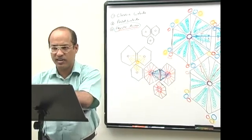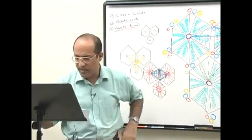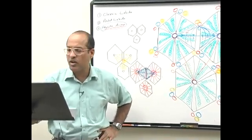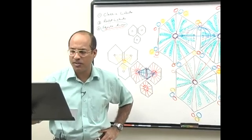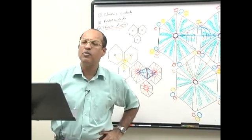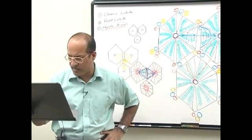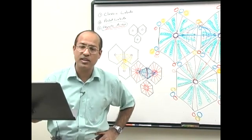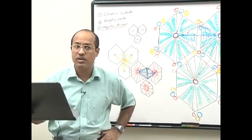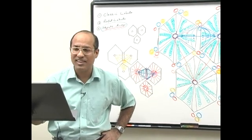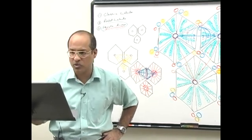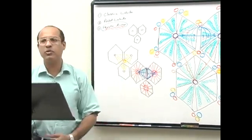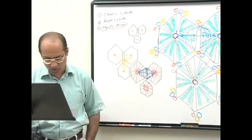We discussed the bile components as the exocrine function of the liver. The liver also has endocrine function — it secretes substances into blood, including plasma proteins like albumins, alpha globulins, beta globulins, fibrinogen, prothrombin, and other coagulation factors, as well as lipoproteins. Through deamination of amino acids, ammonia is produced and then urea is produced. Hepatocytes secrete urea into blood, which eventually passes out through urine.